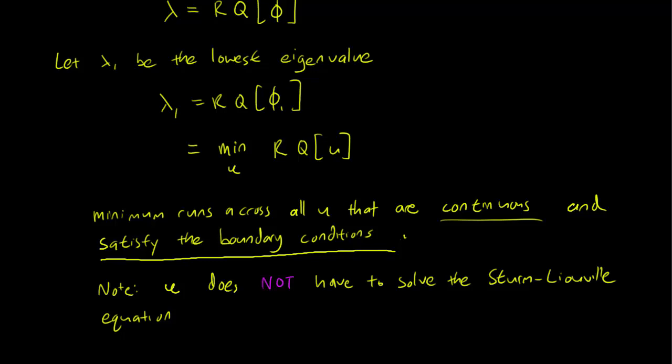And this is great, because here's the problem. The Sturm-Liouville equation is super complicated, it's really hard to solve. So if we can find a way to get information about the eigenvalues without having to solve that nasty equation, so much the better. And it turns out that this minimization principle allows us to do just that.